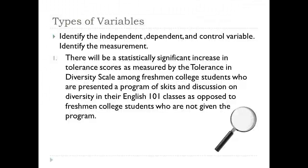Let's first start with the independent variable — that's usually the variable that's being manipulated, or the variable you want to see if it has an effect on another variable. Hopefully you're thinking type of English 101 class. There's an English 101 class that has a program of skits and discussion, and there's an English 101 class that doesn't have that aspect. So our independent variable is type of English 101 class, and it has two levels.